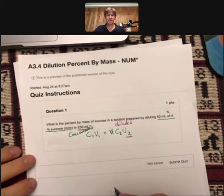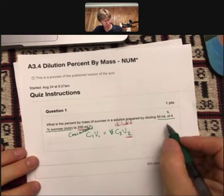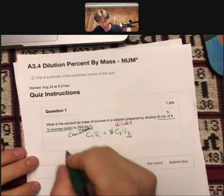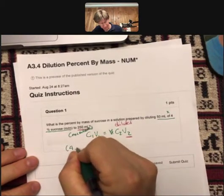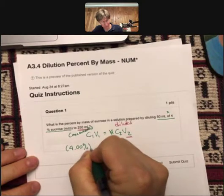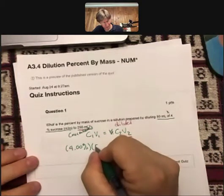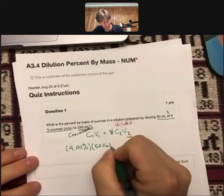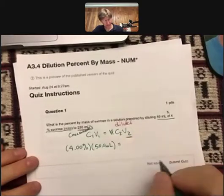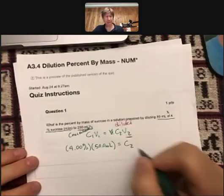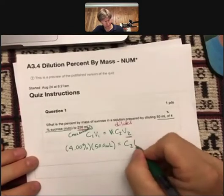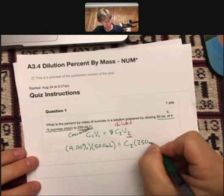And now let's go ahead and plug the numbers in. I have 4%, which is my concentration, and it doesn't have the 0s, but I like to add the 0s in. My volume is 50 milliliters. I don't know my new diluted concentration, but I do know that I took it to 250 milliliters.